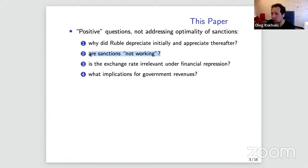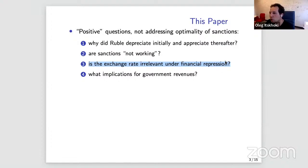The poll question was essentially: are you random-walk forecasters, or are there fundamental forces that would push the ruble back to pre-war levels or weaker? It's interesting to think through what forces could keep the ruble appreciated or lead to depreciation. The basic question is: how did the ruble depreciate so much initially and then appreciate to levels beyond pre-war, and can we conclude sanctions are not working?